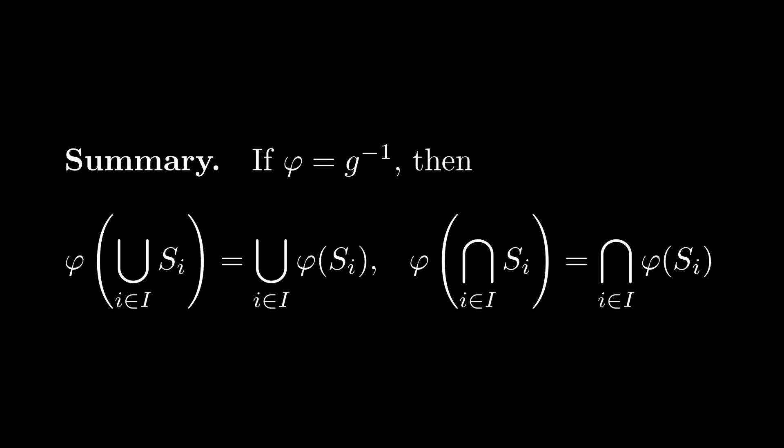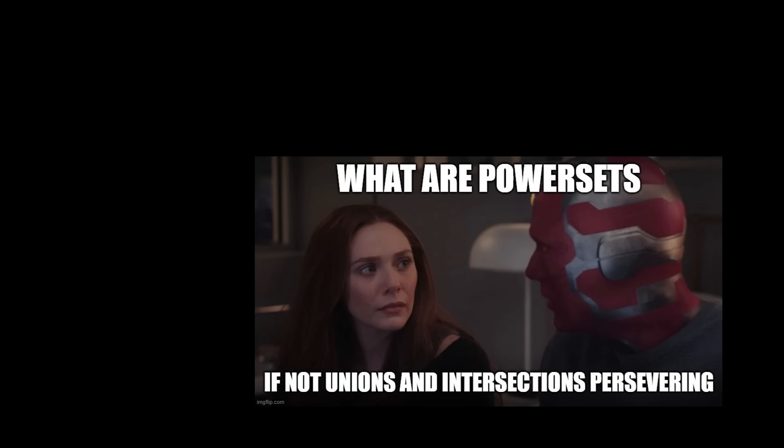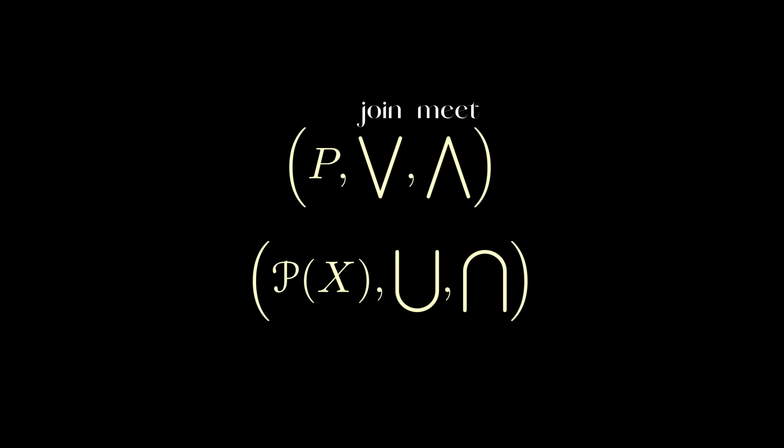So far, we've managed to prove that preimage functions correspond to maps between powersets that preserve arbitrary unions and intersections. This means that unions and intersections are a critical part of how a powerset is the opposite of a set. We can therefore try to describe a coset intrinsically as equipped with a join and meet operation, corresponding to the union and intersection of the powerset, respectively.